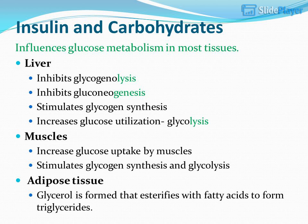Insulin and carbohydrates: Insulin influences glucose metabolism in most tissues. In the liver, it inhibits glycogenolysis, inhibits gluconeogenesis, stimulates glycogen synthesis, and increases glucose utilization via glycolysis. In muscles, it increases glucose uptake, stimulates glycogen synthesis and glycolysis. In adipose tissue, glycerol is formed and esterified with fatty acids to form triglycerides.